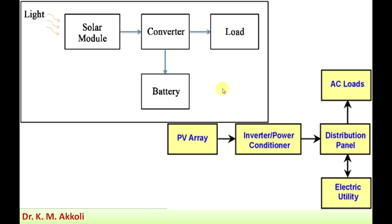The arrangement for power generation includes solar modules. Solar modules consist of a number of solar cells connected to each other to generate power at a higher capacity. When light from the Sun falls on a solar module, it generates electricity in the form of direct current.